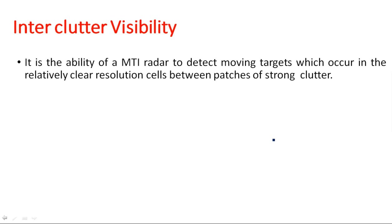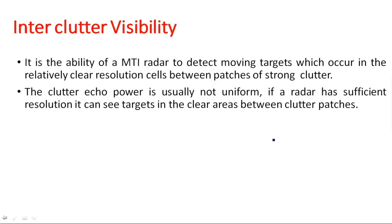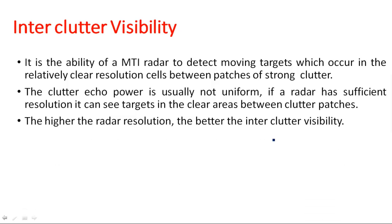Inter-clutter visibility is the ability of an MTI radar to detect moving targets which occur in the relatively clear resolution cells between patches of strong clutter. Clutter echo power is usually not uniform; if a radar has sufficient resolution it can see targets in the clear areas between clutter patches. Even when trees move due to wind, the radar system should still be able to detect the moving target in such an environment. The higher the radar resolution, the better the inter-clutter visibility.